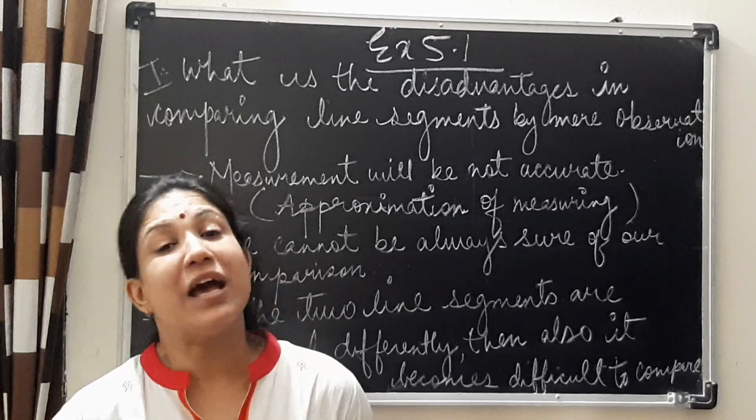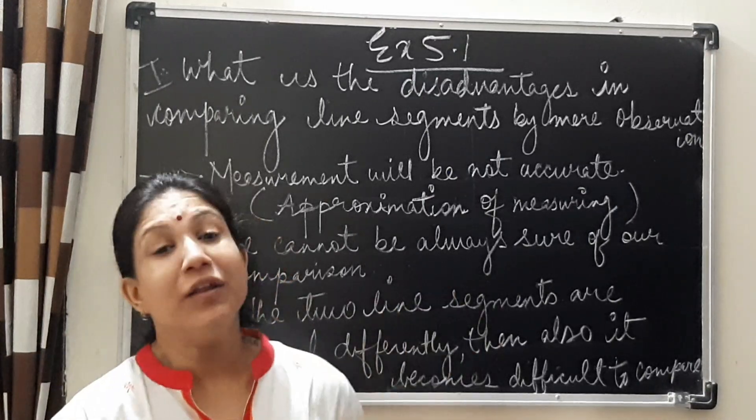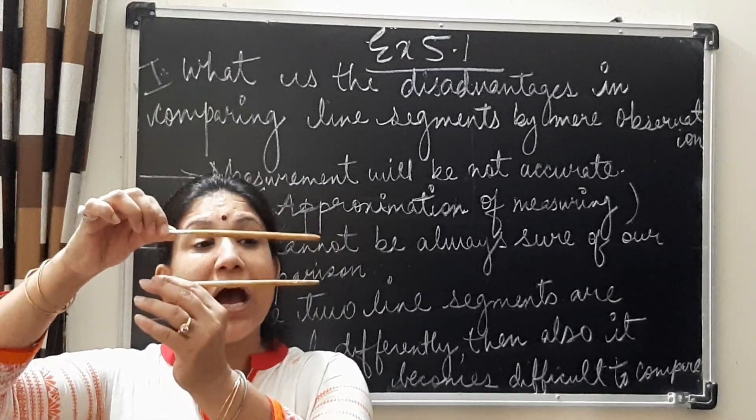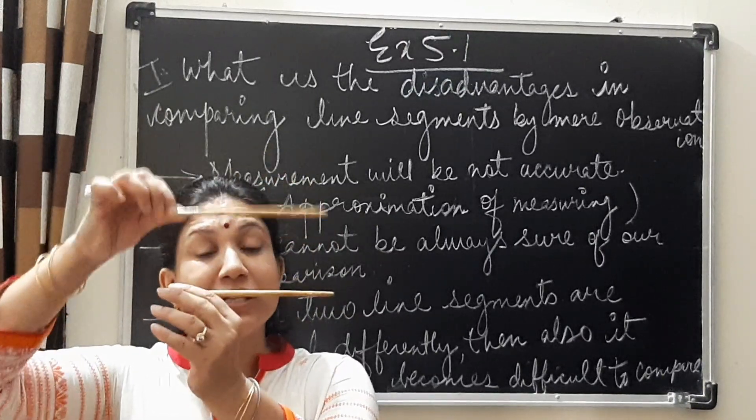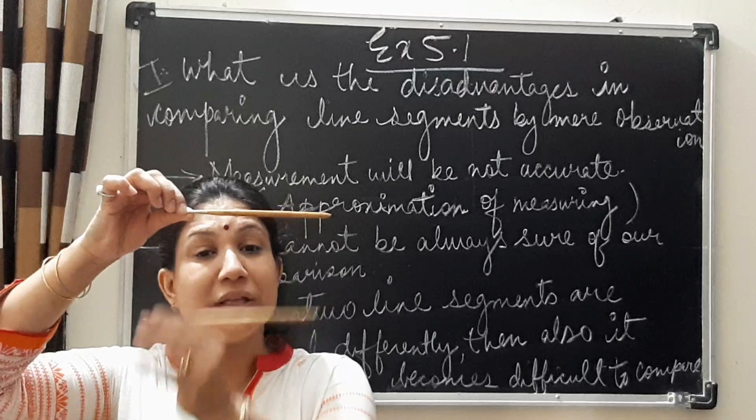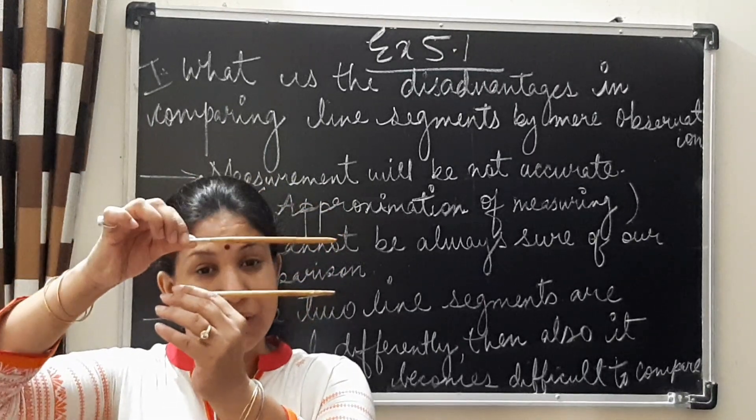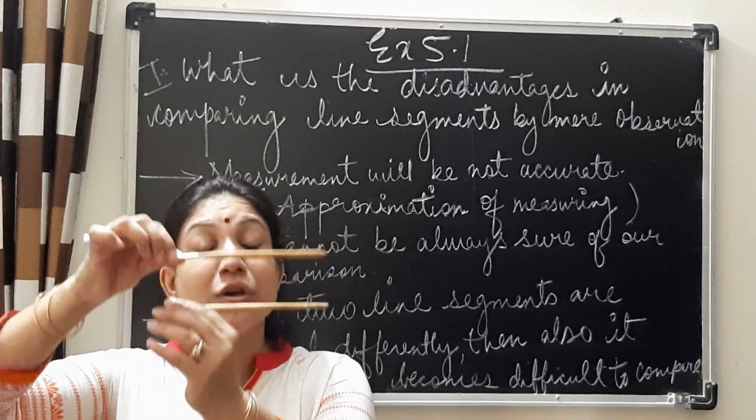The second disadvantage, I have already explained to you, that you are always not sure. Take for example, in this case. Are you sure that the first line segment is longer than the second one? Or the second line segment is longer than the first one? No. We are not sure.